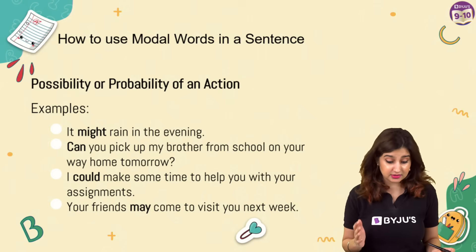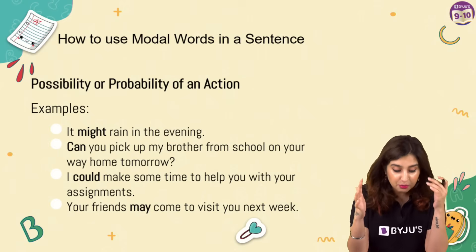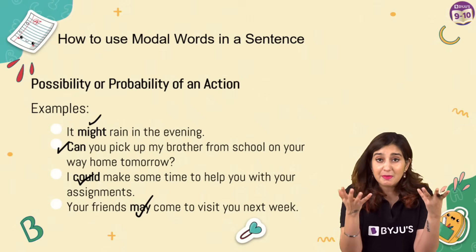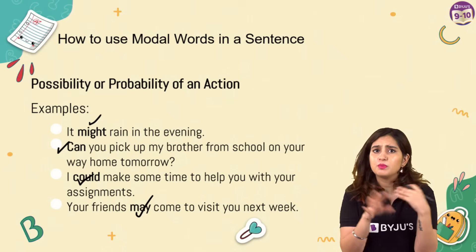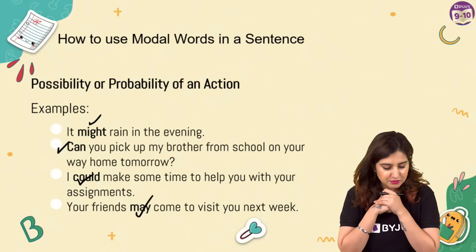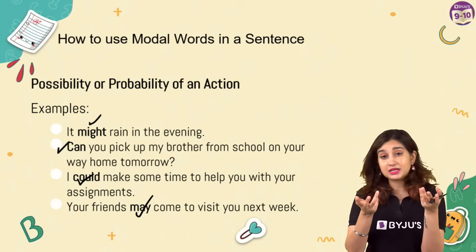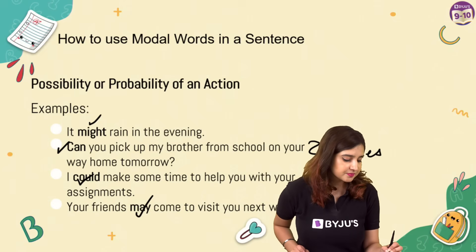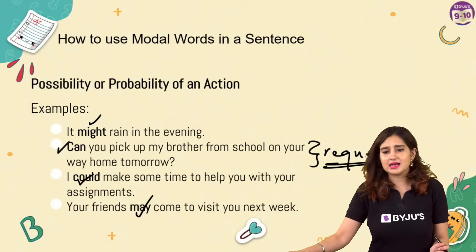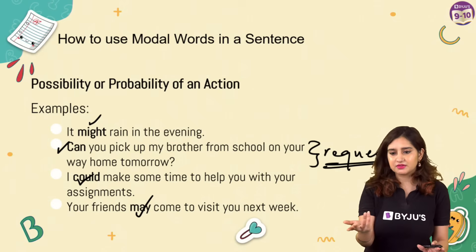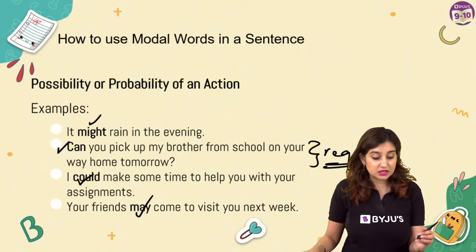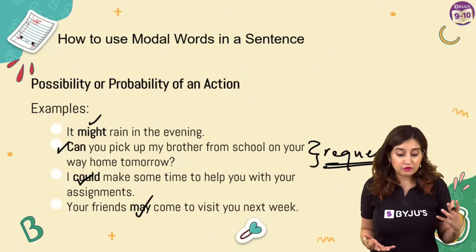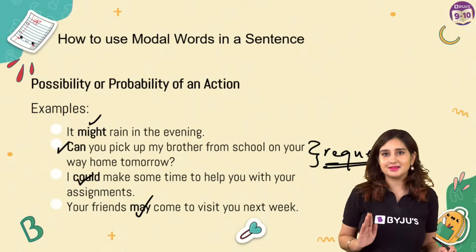How to use modal verbs in a sentence for possibility or probability: 'It might rain in the evening' - there's a possibility it will rain. 'Can you pick up my brother from school on your way home?' - I would generally classify this as a request rather than possibility. 'I could make some time to help you with your assignments' - could shows it's possible I'll find time even if my schedule is busy. 'Your friends may come to visit you next week' - there is a probability of them visiting.